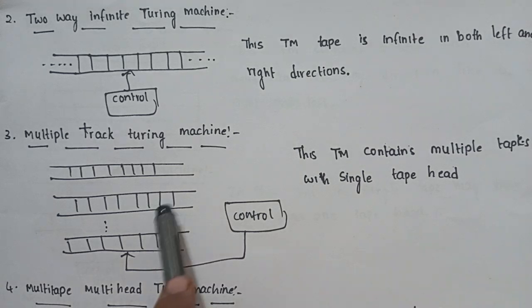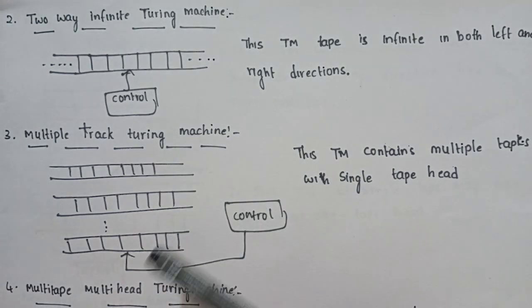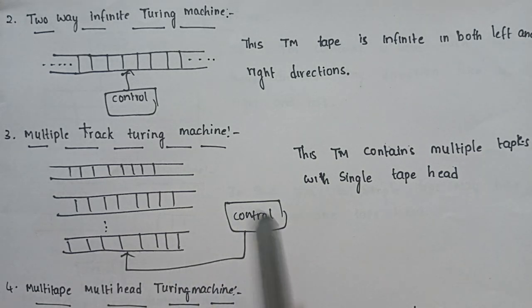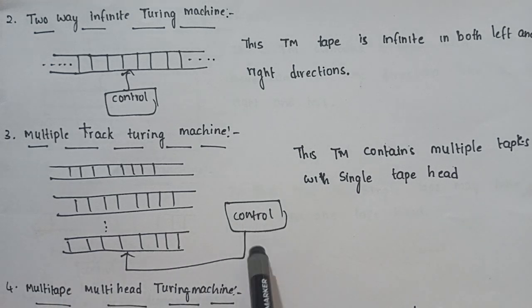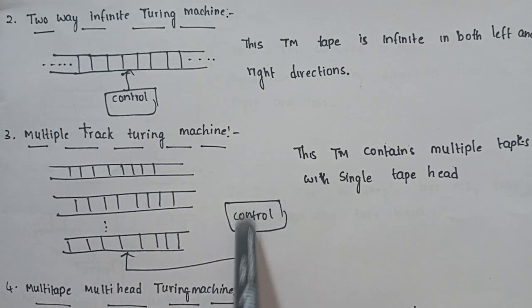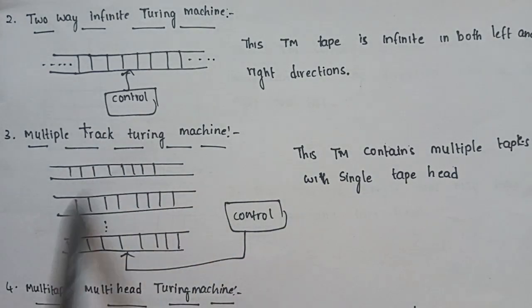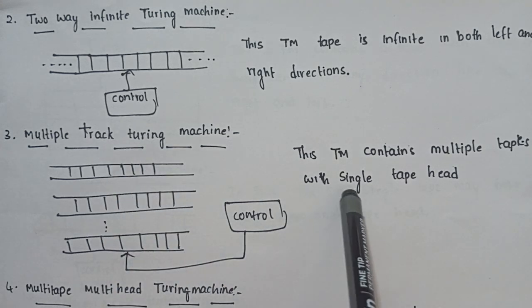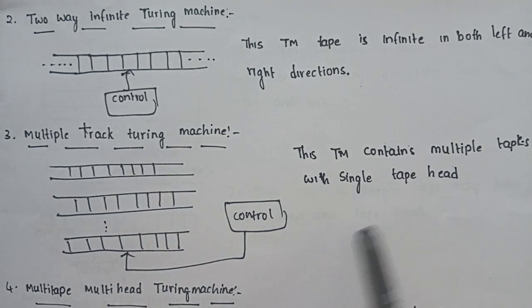Next is the Multiple Track Turing Machine. This Turing Machine contains multiple tracks with a single tape.